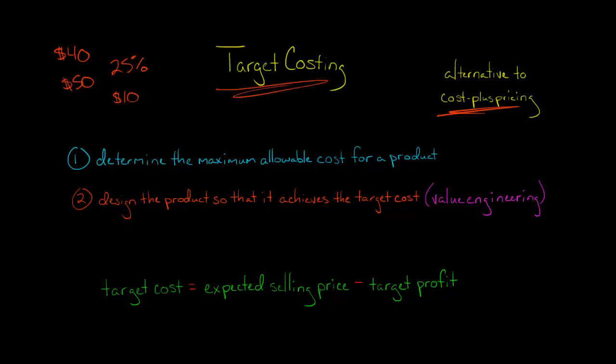The way target costing works is you set the price first, and you determine the maximum allowable cost to make that product, and then you design the product in such a way that you are not going to exceed the maximum allowable cost. This is related to the concept of value engineering. From designing the product from the very beginning, you make sure we are not going to exceed the target cost.